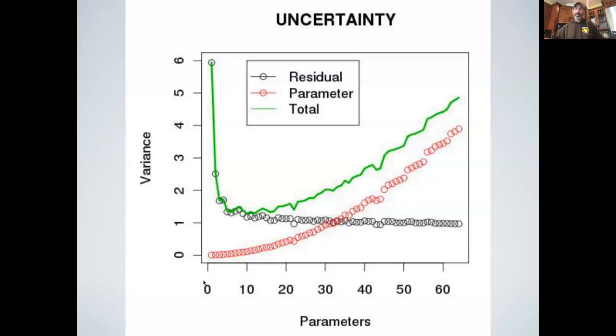And so as I increase the number of parameters in the model, I have less and less information per each data point. So if you imagine the limit, if I had a thousand, if I fit a polynomial to a data set that had a thousand parameters and a thousand data points at that point, I've stopped doing statistics and I'm now doing algebra again. The line will fit through the data perfectly. The residual error will go to zero.